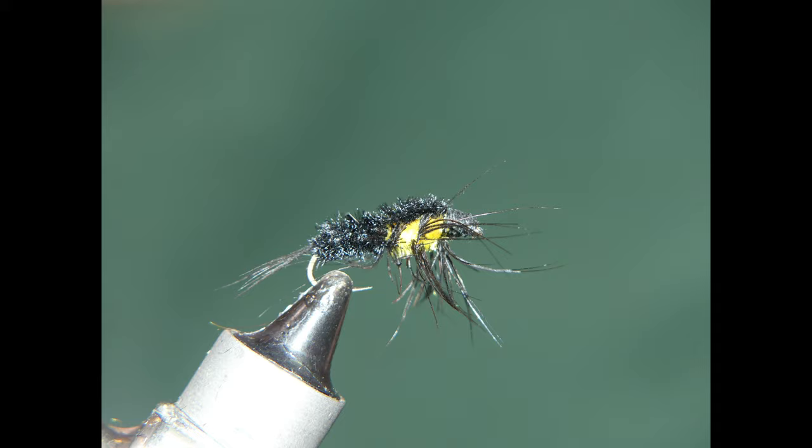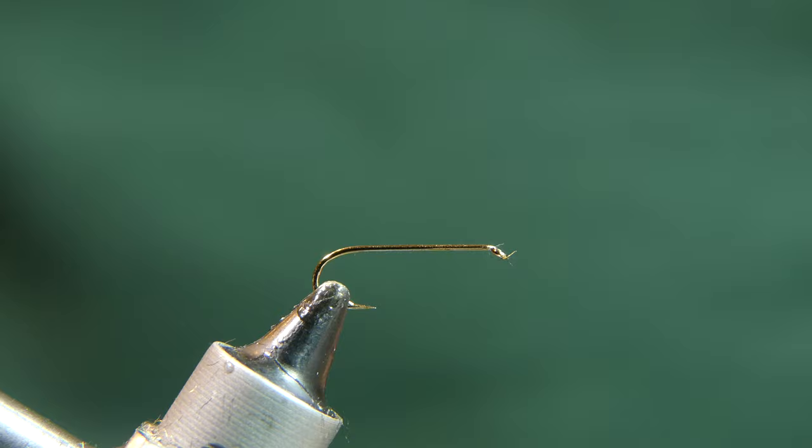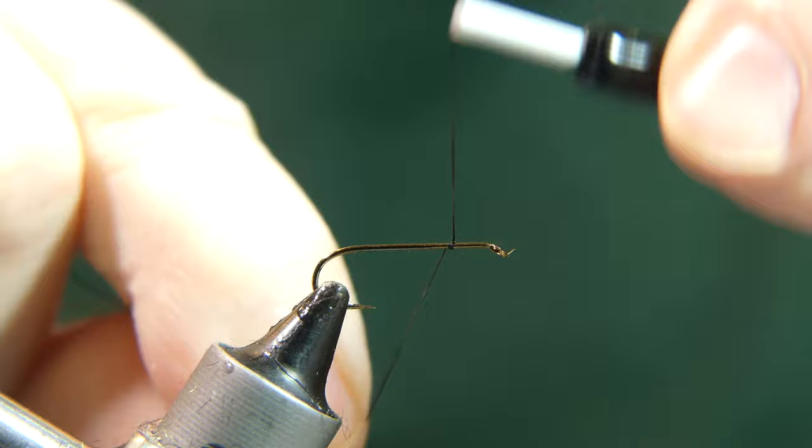The hook I have in the vise is from the Wholesale Fly Company here in Pennsylvania. It's a size 12, three extra long streamer hook. The thread I'm using is the Danville 140 Denier.